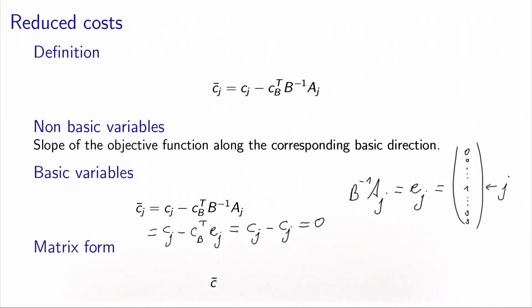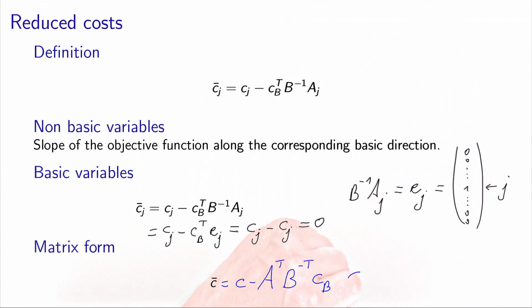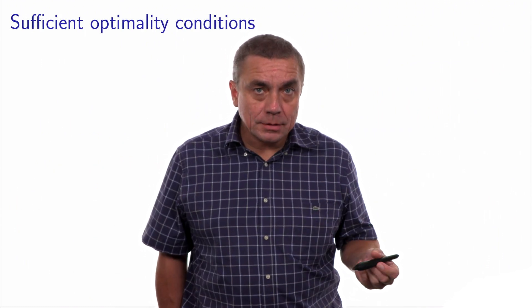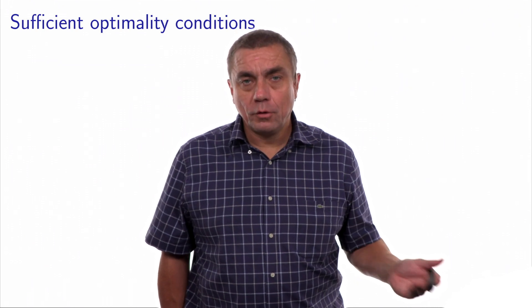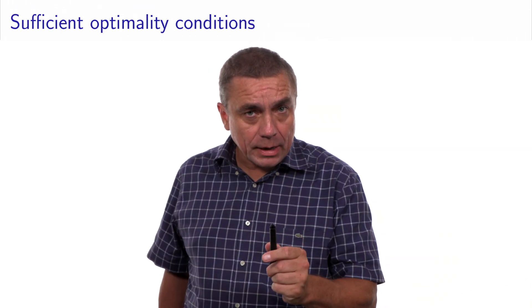We can now write the reduced cost in matrix form: it's the vector c − Aᵀ B⁻ᵀ cB, which belongs to ℝⁿ and is defined for all variables. The reduced costs allow us to write sufficient optimality conditions: if all reduced costs are non-negative, then x* is optimal. Since reduced costs for basic variables are always zero, we only need to check the non-basic variables.